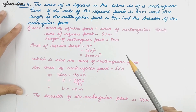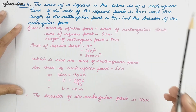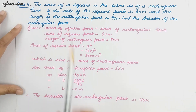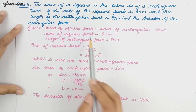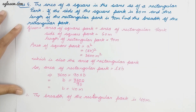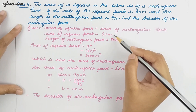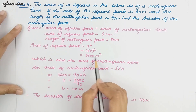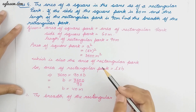Our next question: the area of a square park is the same as a rectangular park. If the side of the square park is 60 meter and the length of the rectangular park is 90 meter, find the breadth of the rectangular park. The area of the square park is a squared, with a equals 60 meter, so the area is 3600 meter square, which is also the area of the rectangular park.